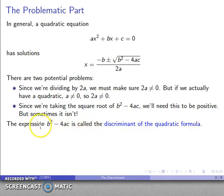And because of that, this expression, b squared minus 4ac, is called the discriminant of the quadratic formula. Now, if you continue to study mathematics, you'll look at other discriminants. So we do want to be specific here. This is the discriminant for the quadratic formula.